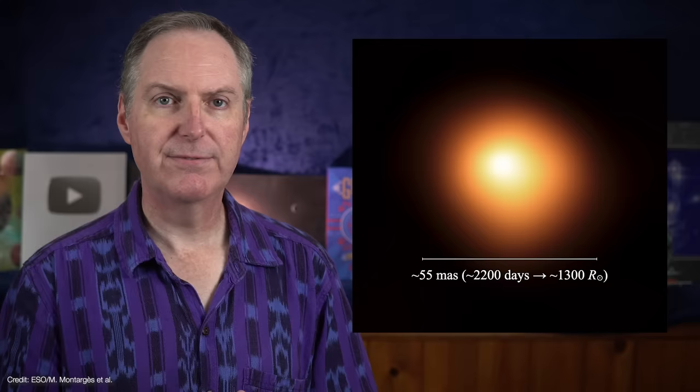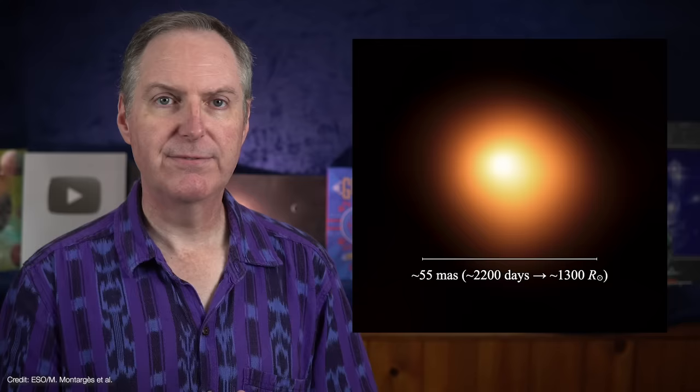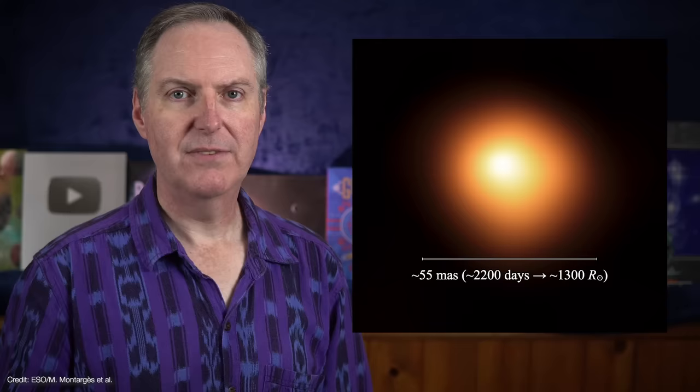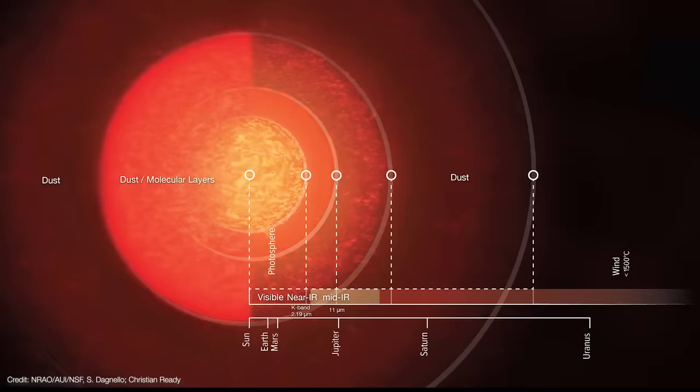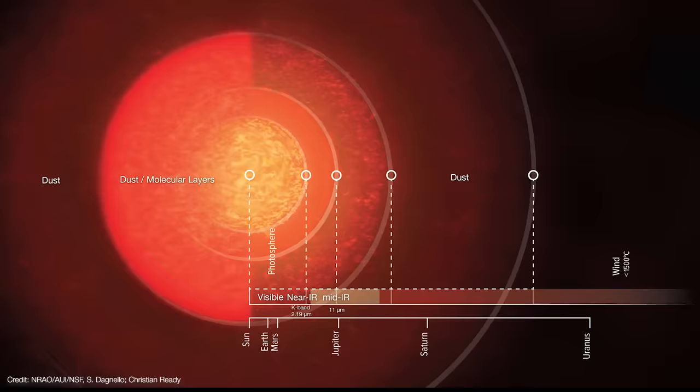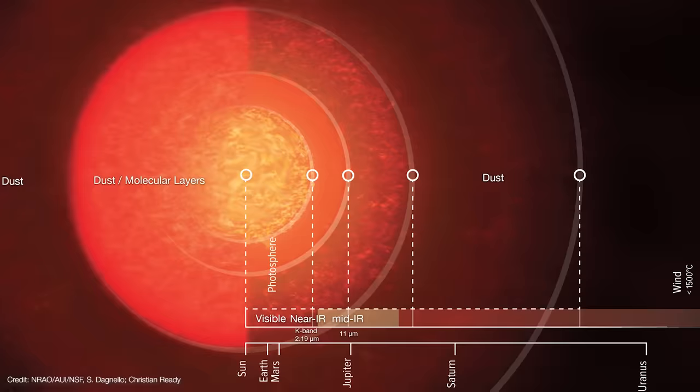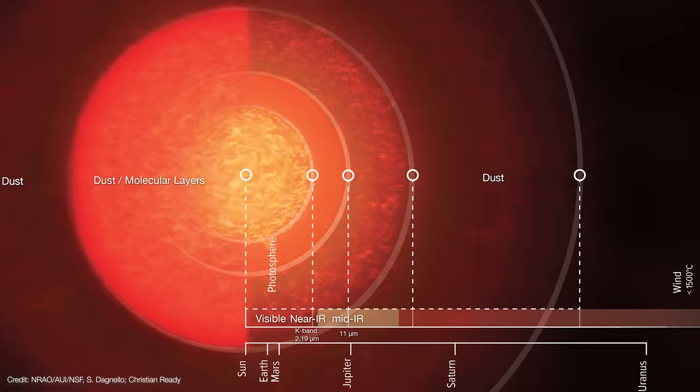The problem is that those measurements were made in the mid-infrared at a wavelength of 11 microns. Stars aren't solid objects, and different wavelengths penetrate down to different depths. Ideally, visible light measurements would reveal the star's photosphere and you could directly measure its size. But Betelgeuse is surrounded by foreground dust. That dust could make Betelgeuse appear too small because it would dim the edges of the star that much more. That's why Betelgeuse's size is typically measured in the near-infrared K band at 2.19 microns. That slightly longer wavelength is enough to penetrate most of the dust and reveal the star.